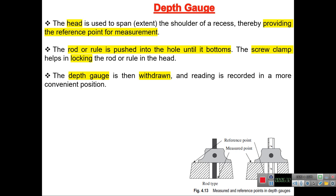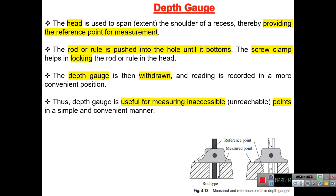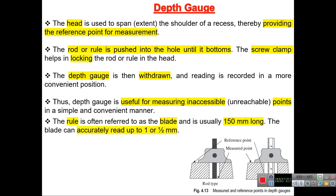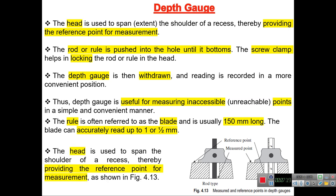The depth gauge is then withdrawn and the reading is recorded in a more convenient position. It is useful for measuring inaccessible points, since such holes or recesses cannot be measured with a simple rule. The blade is usually 150 mm long and can accurately read up to one or half a millimeter — just like a simple rule. The head spans the shoulder of the recess, providing the reference point for measurement.